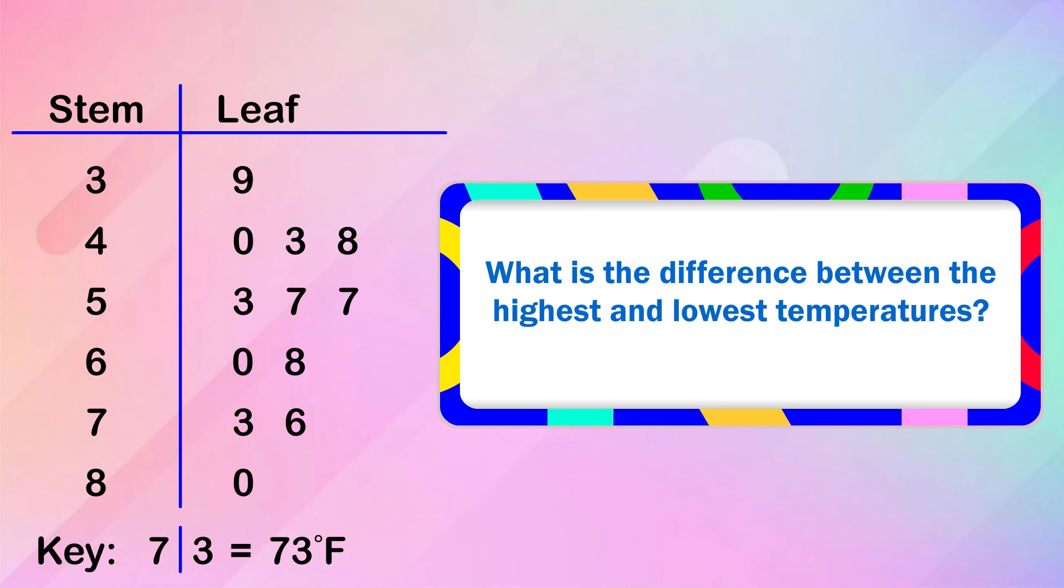What is the difference between the highest and lowest temperatures? The highest temperature was 80 degrees Fahrenheit, and the lowest was 39 degrees Fahrenheit. 80 minus 39 is 41. Therefore, the difference between the highest and lowest temperatures is 41 degrees Fahrenheit.